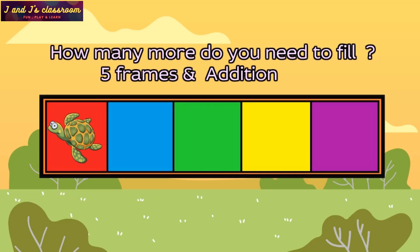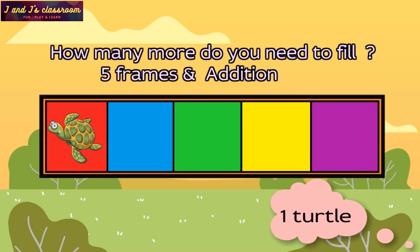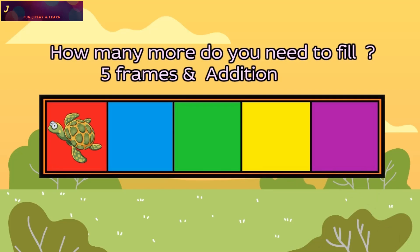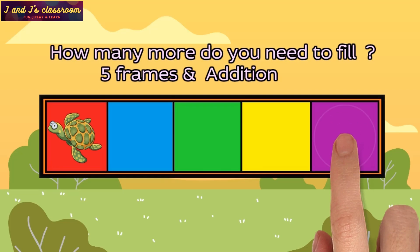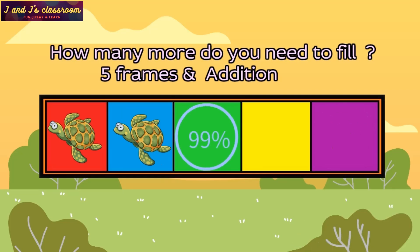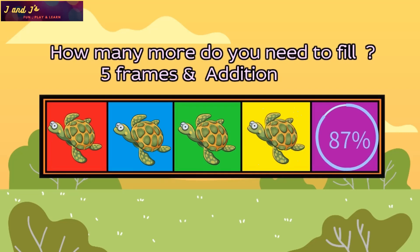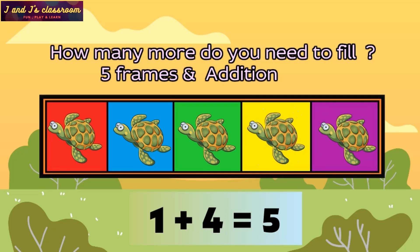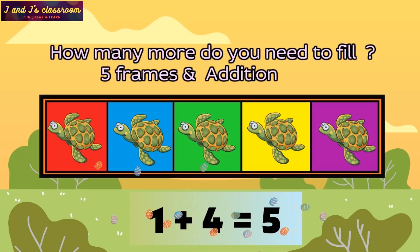Can you identify how many turtles are in the 5 frame? 1 turtle. Now tell me how many more do you need to fill the 5 frame? 1, 2, 3, 4. 4 more turtles. When we add 4 more to 1, we get 5. That is 1 plus 4 equals 5.